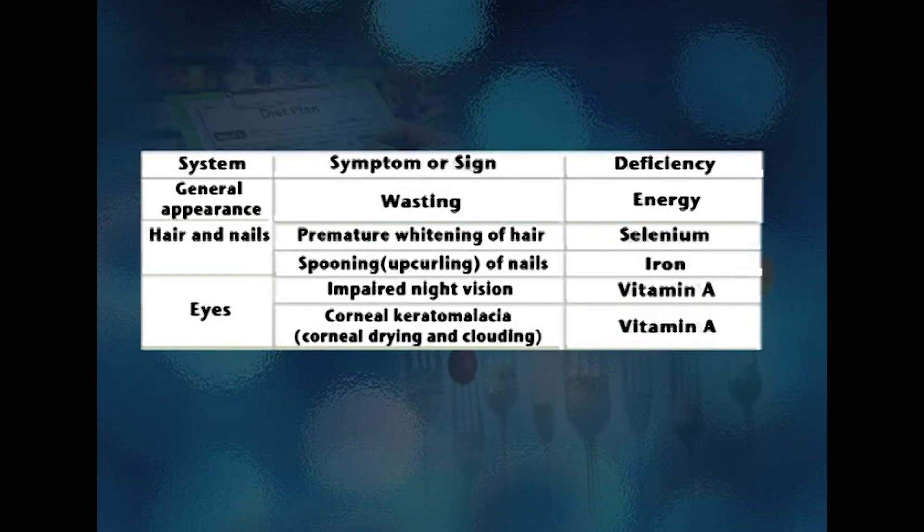For example, muscle wasting is mainly due to deficiency of energy; premature whitening of hair can be due to deficiency of selenium in the diet; spooning of nails is because of deficiency of iron; and impaired night vision is because of vitamin A deficiency, and so on and so forth.